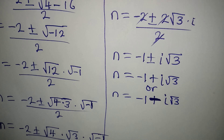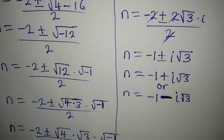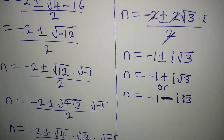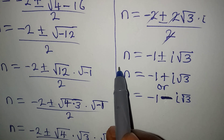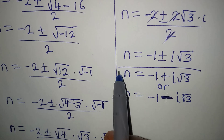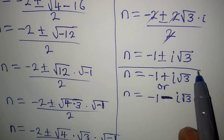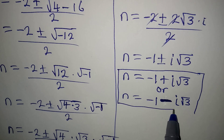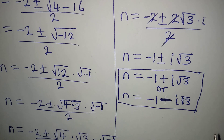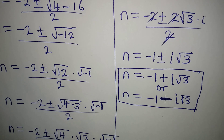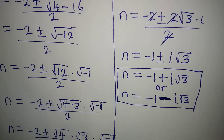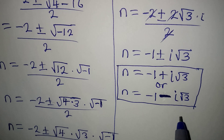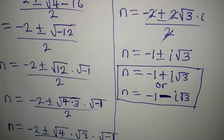From here we have 2 values of n. But remember, none of these values of n is a real solution. These two are complex solutions.